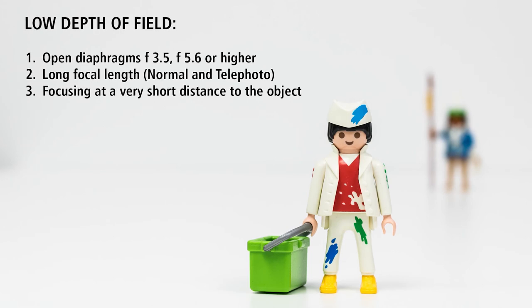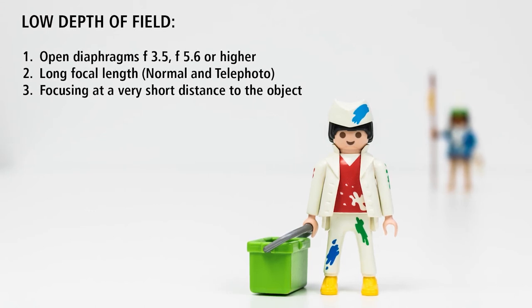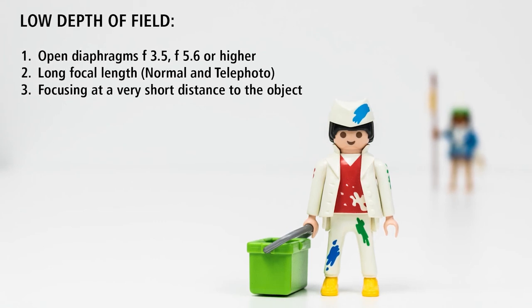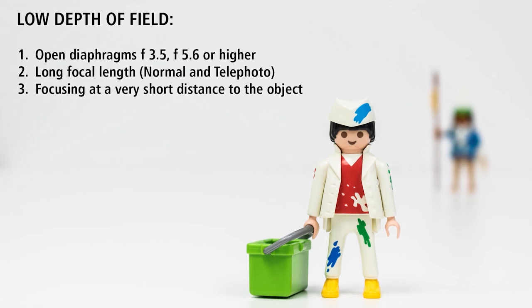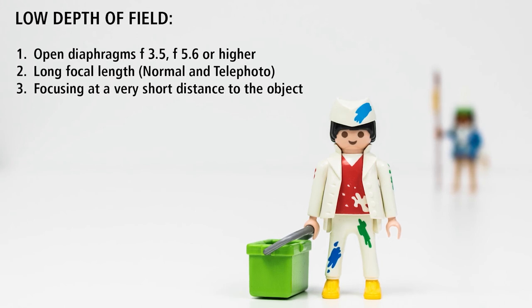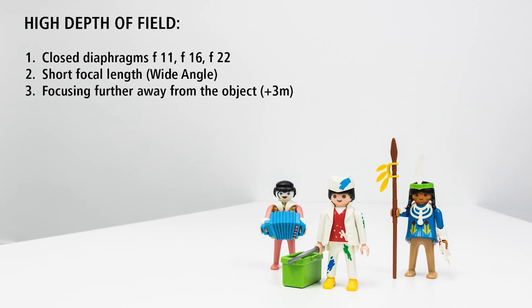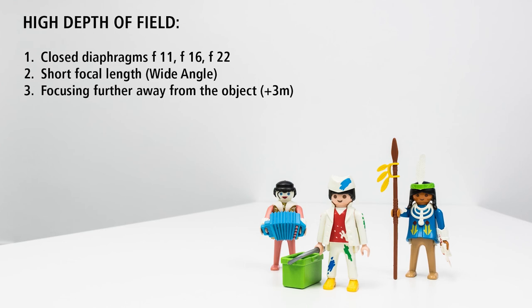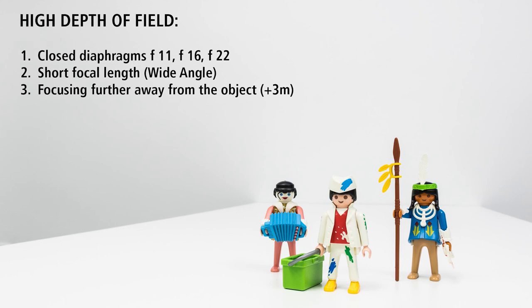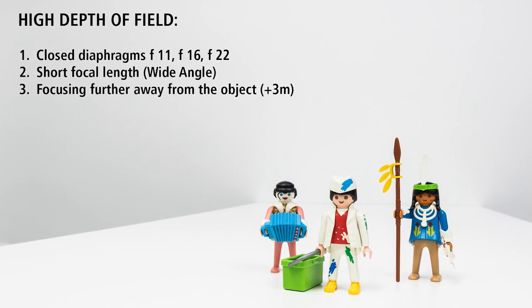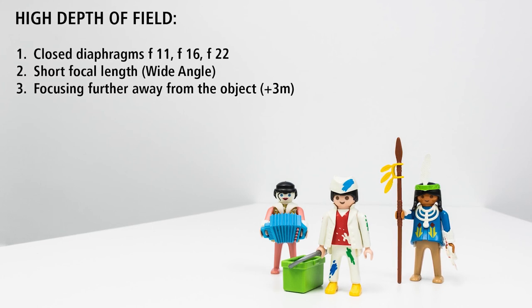Just to sum up: in order to get a low depth of field, set the following parameters. First, use an open diaphragm like 3.5, 5.6 or even higher. Secondly, work with a long focal length — longer than 50mm if possible. Thirdly, the best way to get better blurry effects is focusing at a very short distance to the object. To get a high depth of field, use closed diaphragms like F11, F16, F22, depending on the values available in your camera. Secondly, set a short focal length — the closest to wide angle you can, like 18mm, 20, or 24. Thirdly, focus farther away from the object — by placing objects at a distance of around 3 meters, they will be made much clearer.